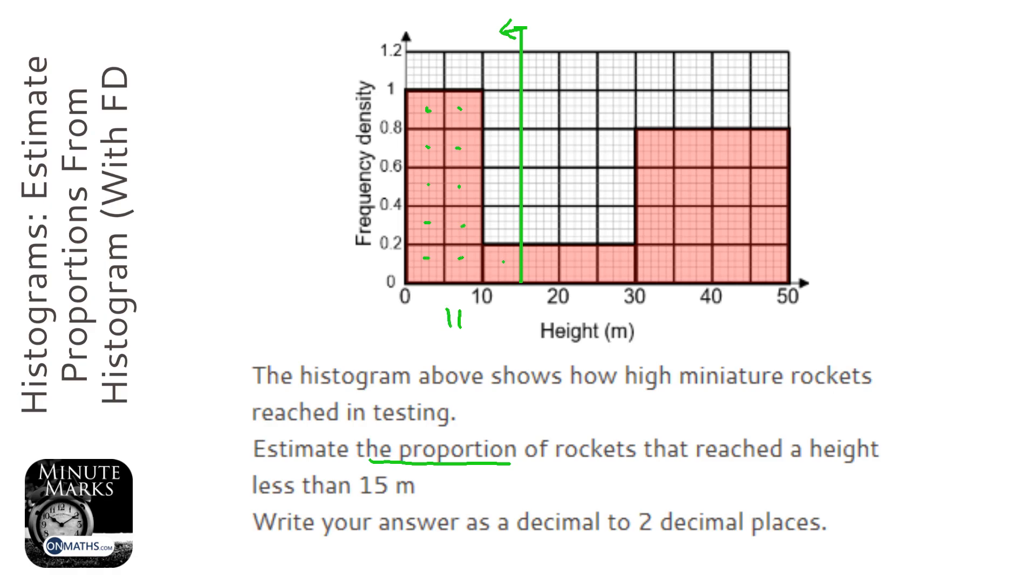And in total we've got 12, 13, 14, 15, 16, 17, 18, 19, 20, 21, 22, 23, 24, 25, 26, 27, 28, 29, 30.